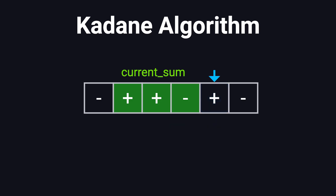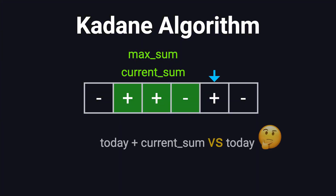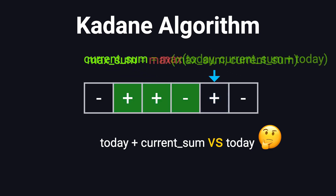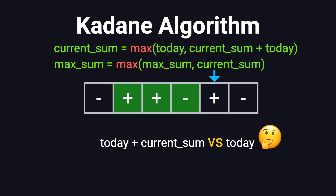Kadane's algorithm is simply doing that exact check at every step. We'll use a variable called current_sum to track the running sum of the current subarray, and another variable called max_sum to record the best result we've seen so far. Each day, we ask ourselves: would it be better to add today's value to current_sum, or just start fresh from today? If adding it is better, we continue. If today's value alone is better, we reset current_sum to today's value. This gives us the core update rule of Kadane's algorithm — today's decision only depends on yesterday's result and today's value: either we keep going, or we start fresh. Once we finish looping through the array, max_sum will contain the maximum subarray sum.